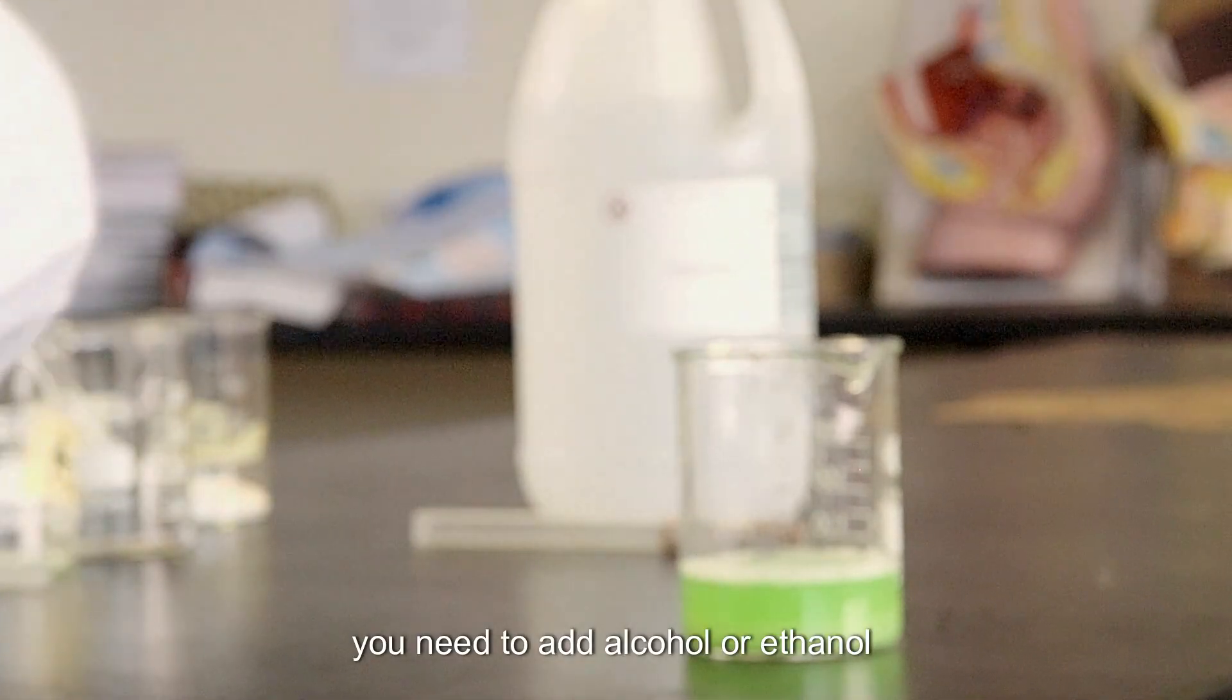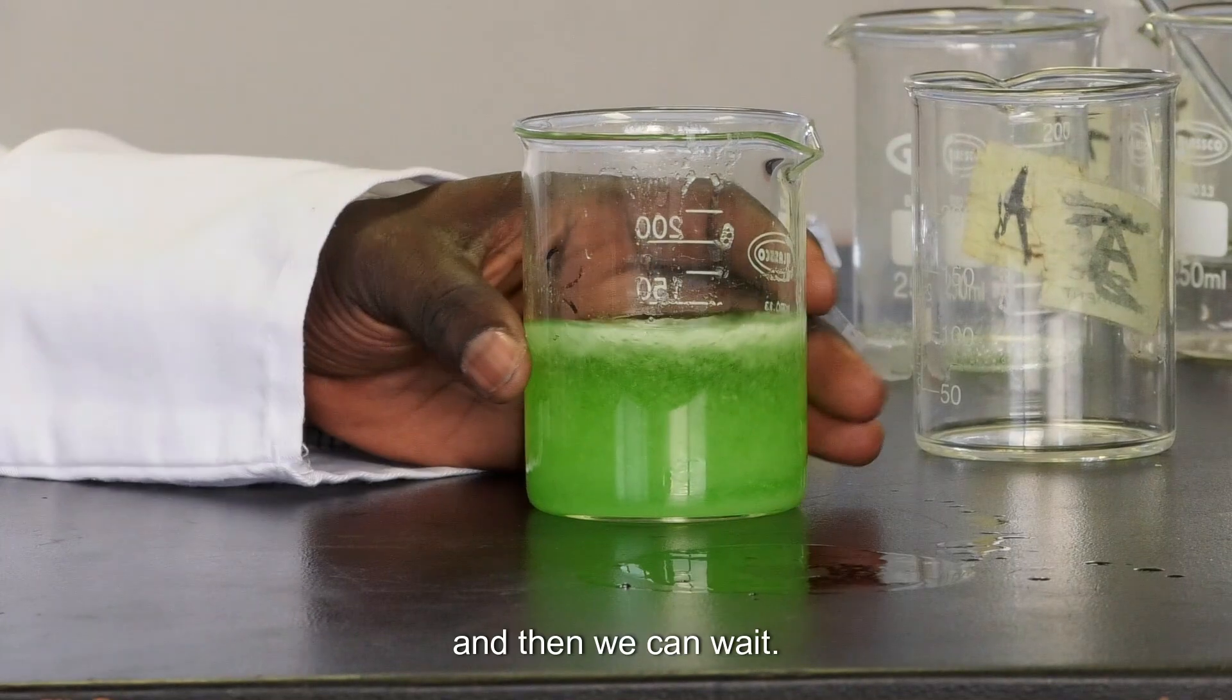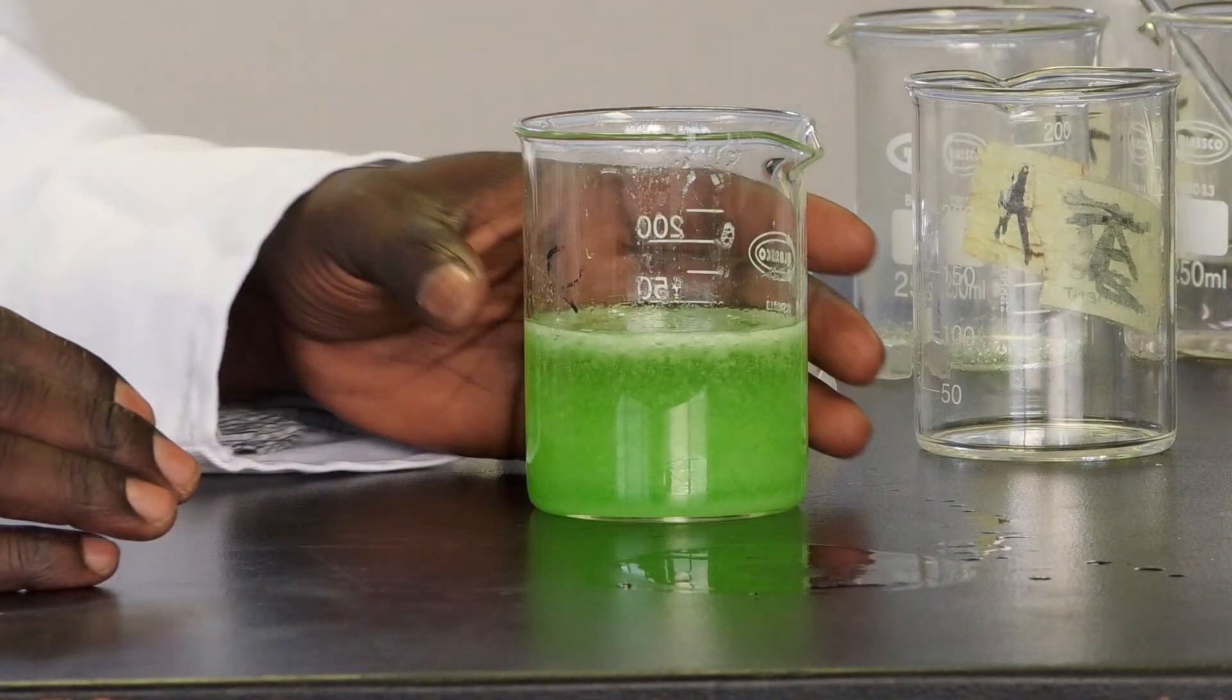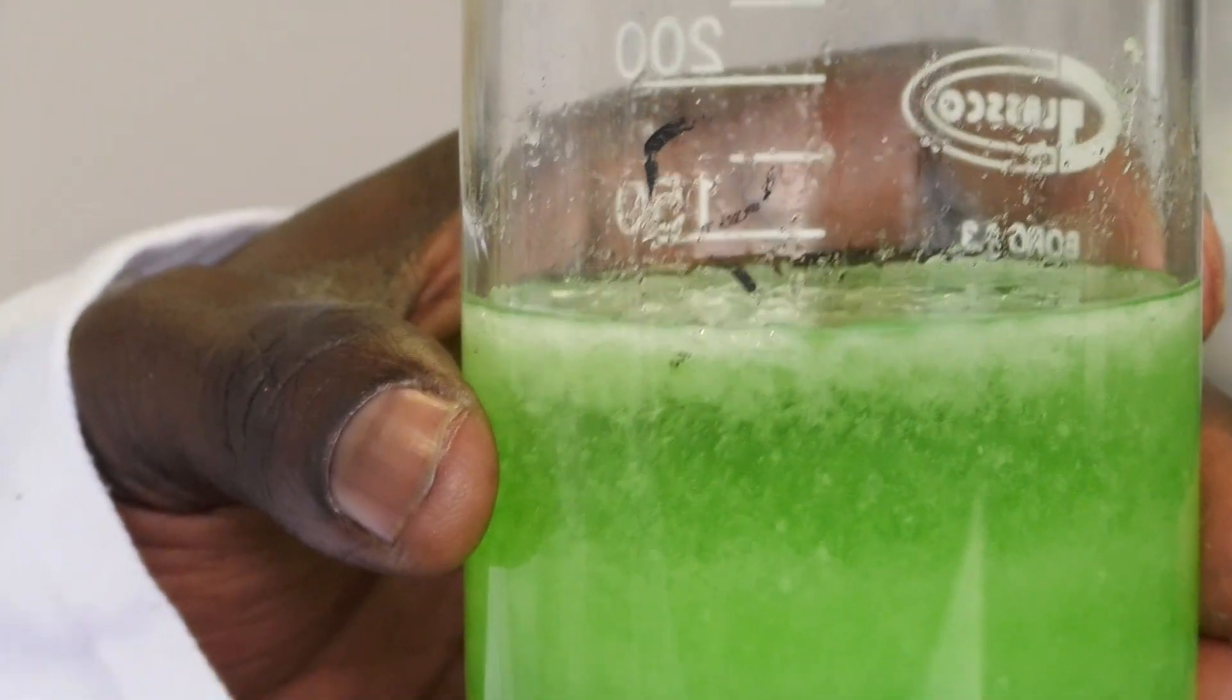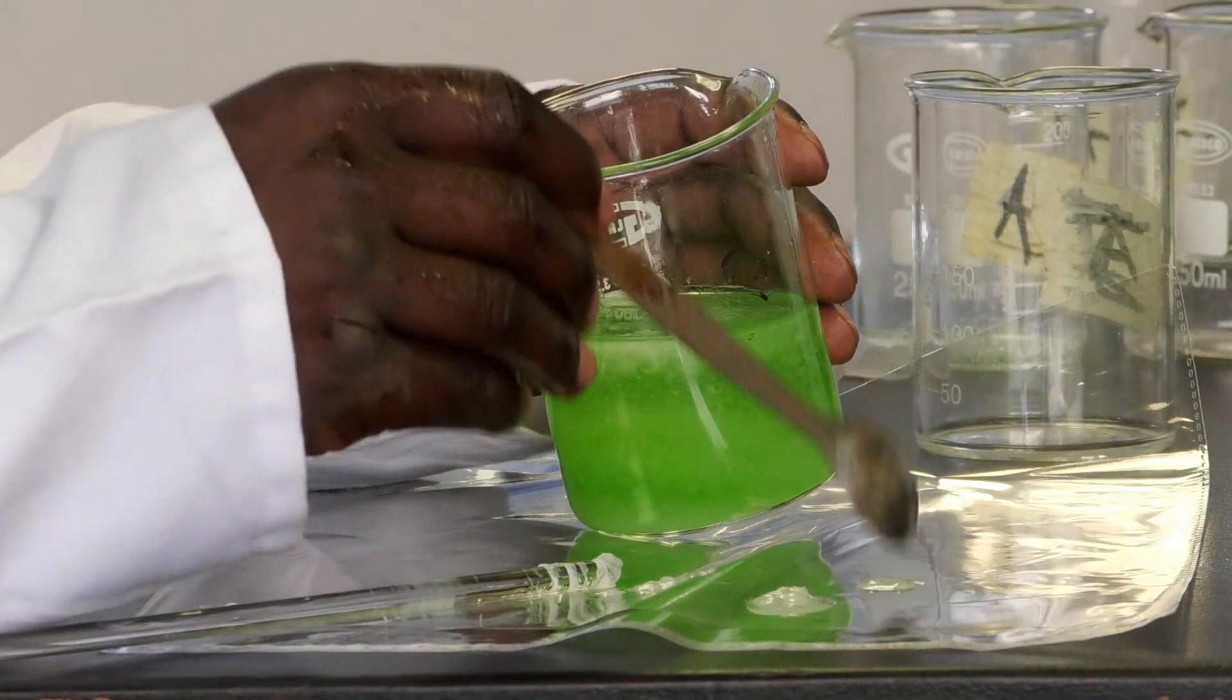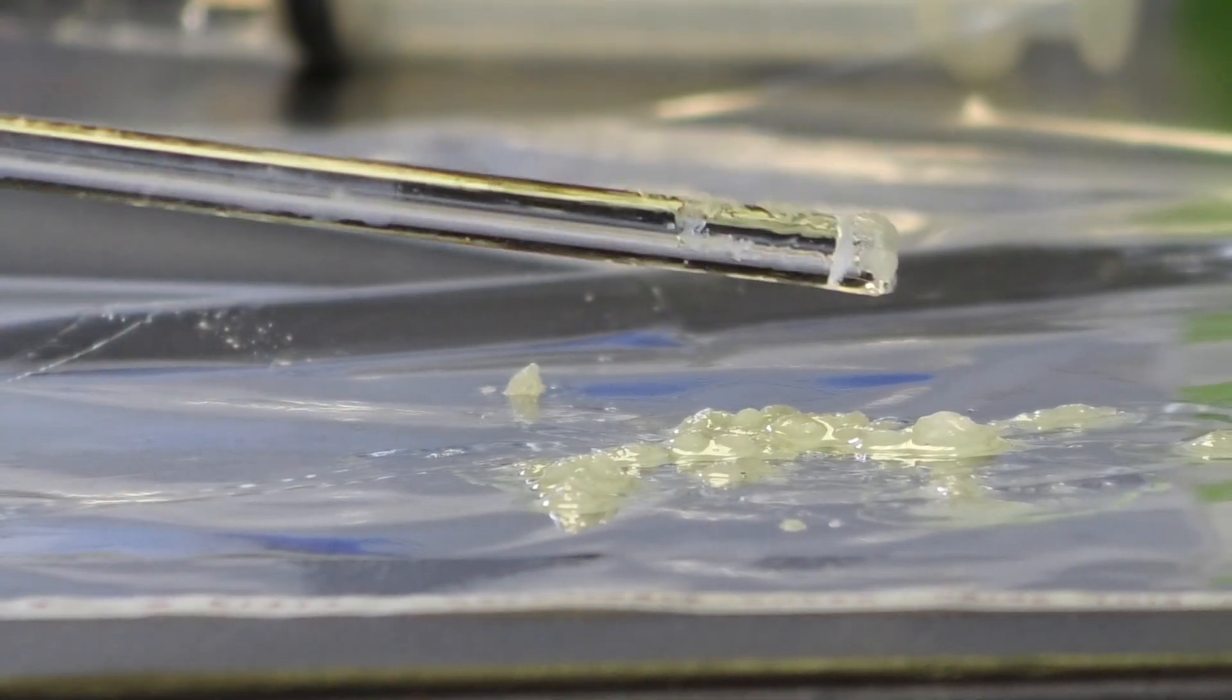Now we're going to add the ethanol in here and then we can wait a bit as it precipitates. So basically that is DNA. The extraction is scoop it out with a spoon and then when you view it under microscope, you'll see entangled structures.